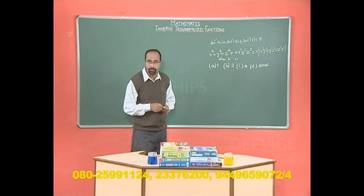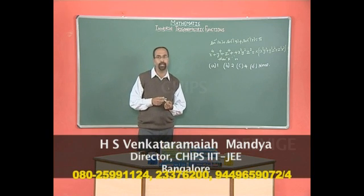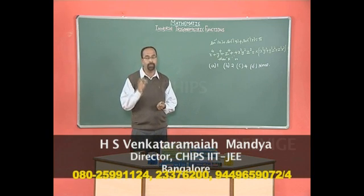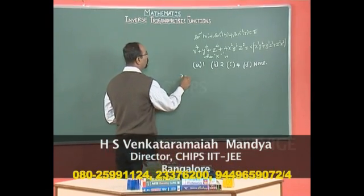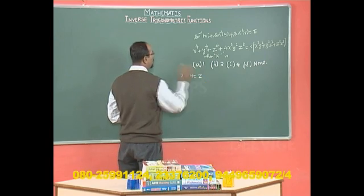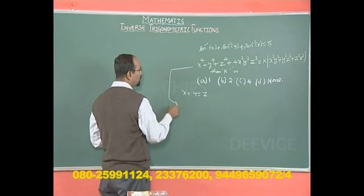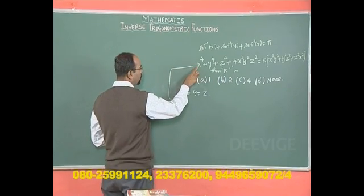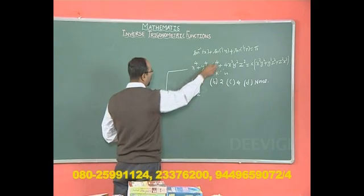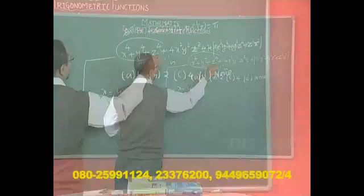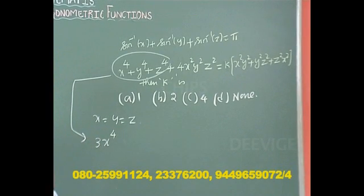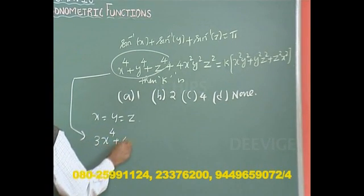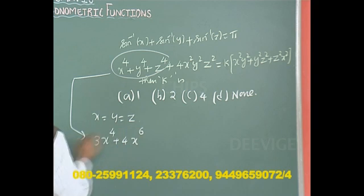Even though this problem can be solved by the standard method, let me give you a simple shortcut. Let us make x = y = z. What happens to the left-hand side? x⁴ + y⁴ + z⁴ becomes 3x⁴, and 4x²y²z² becomes 4x⁶.